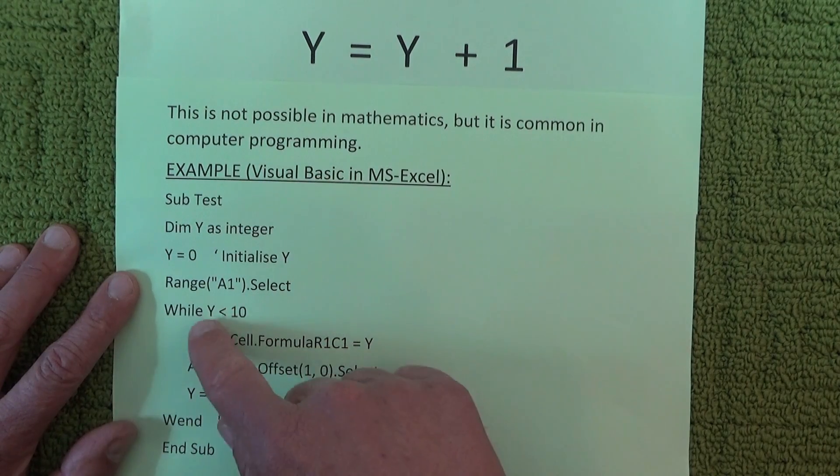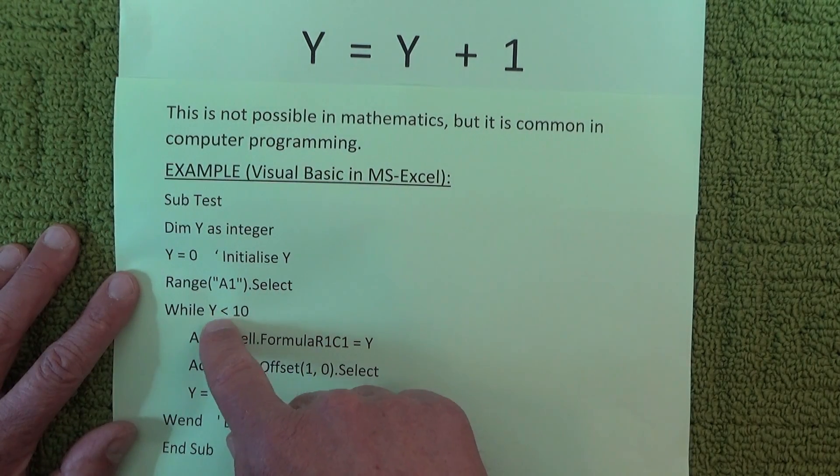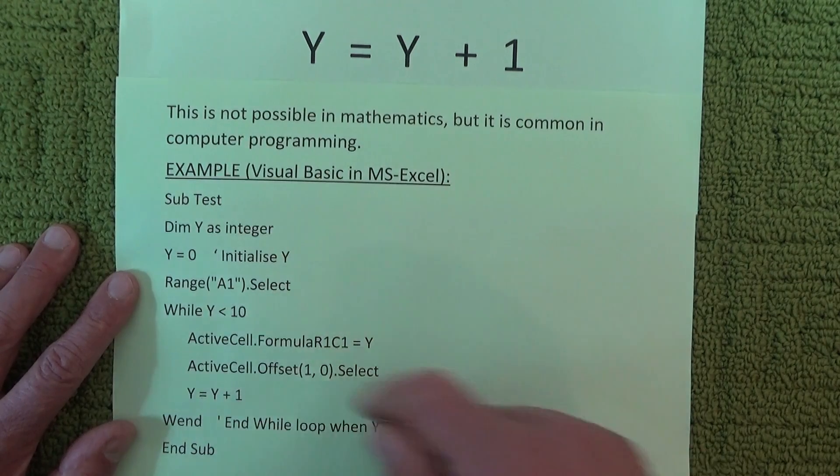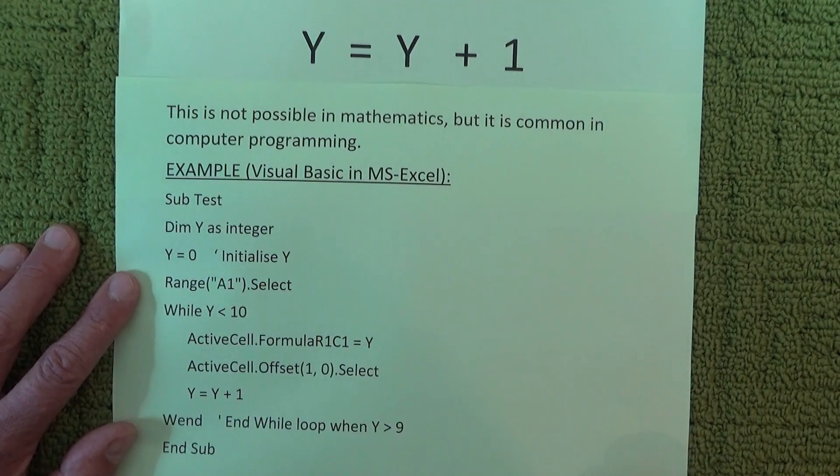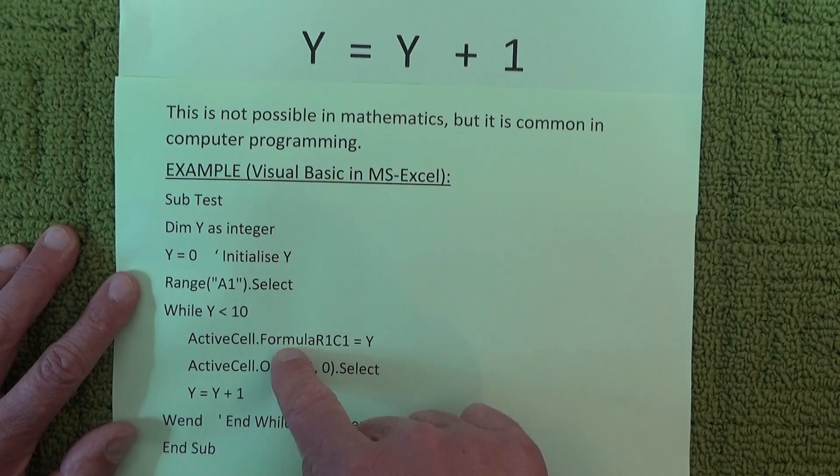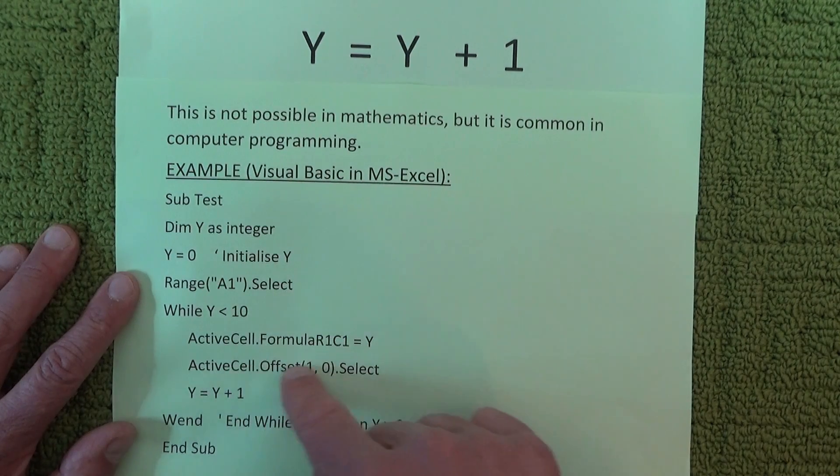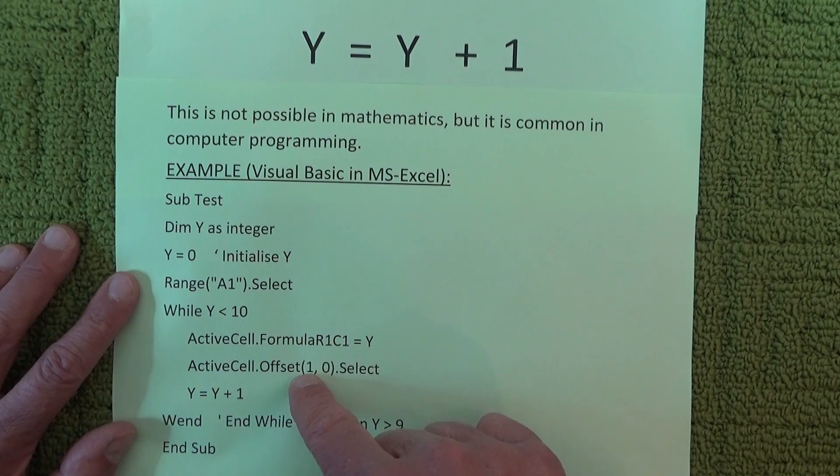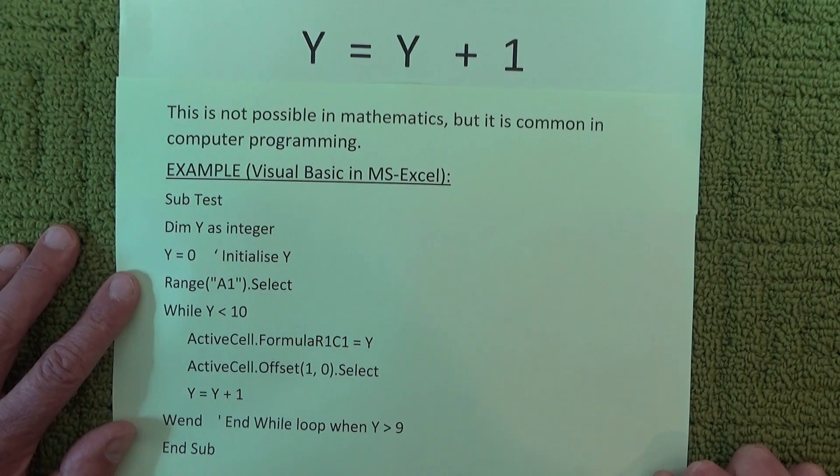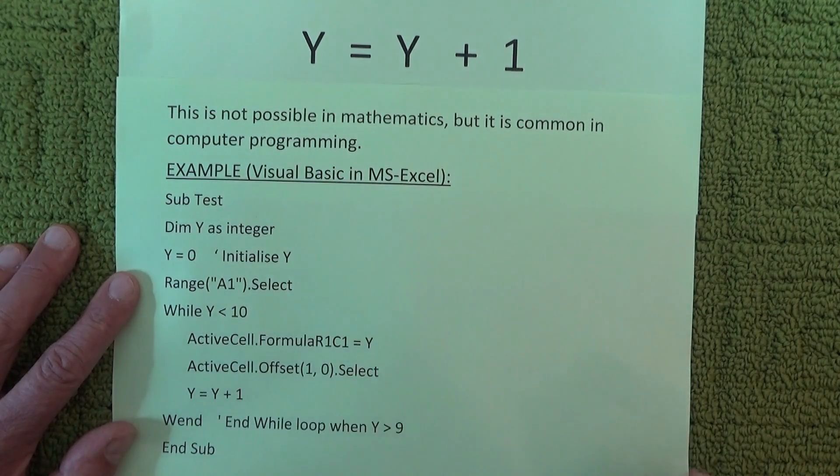And you keep going down through that loop until Y is no longer less than 10 and then you drop out of it. And we've got some other bits of coding there which selects the active cell which is A1 and then that active cell drops by 1 every time you go through that loop.